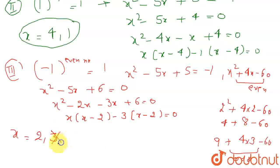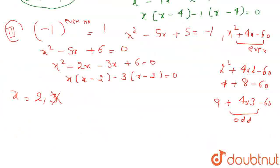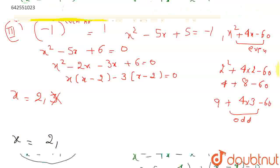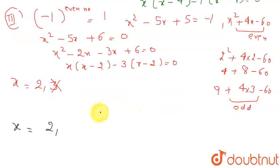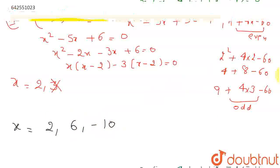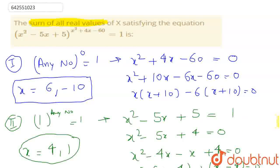So 3 will not be a solution. So the possible values of x are, x would be equal to either 2 or 6, minus 10, or 4 and 1.